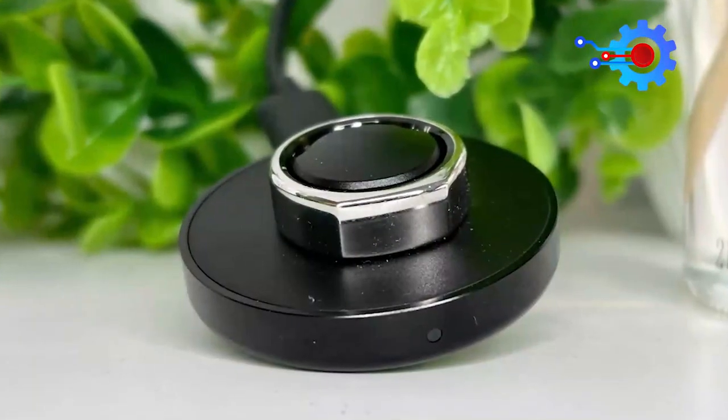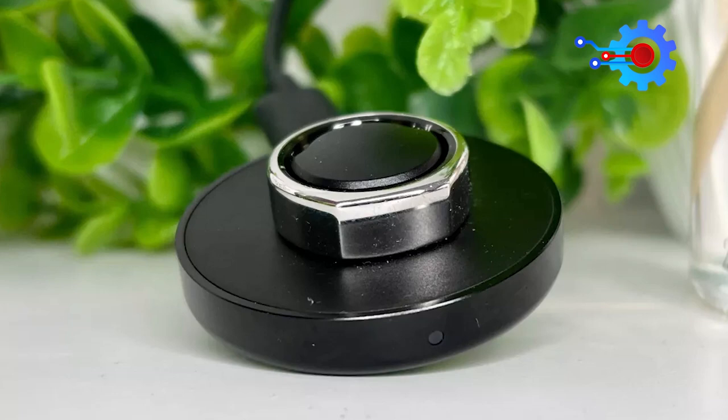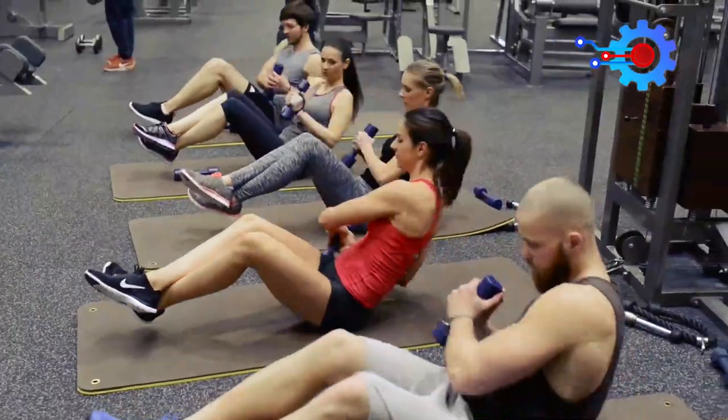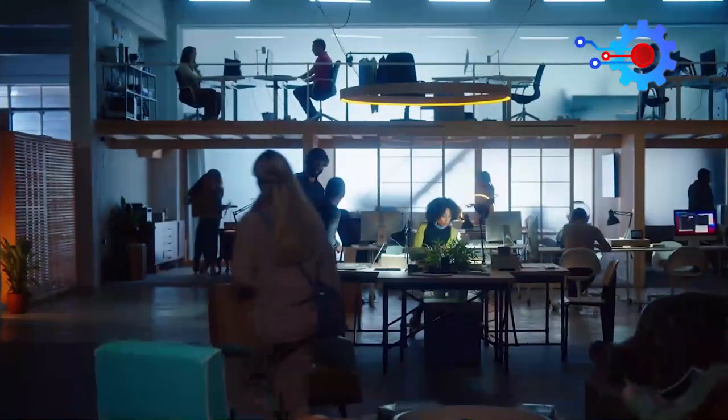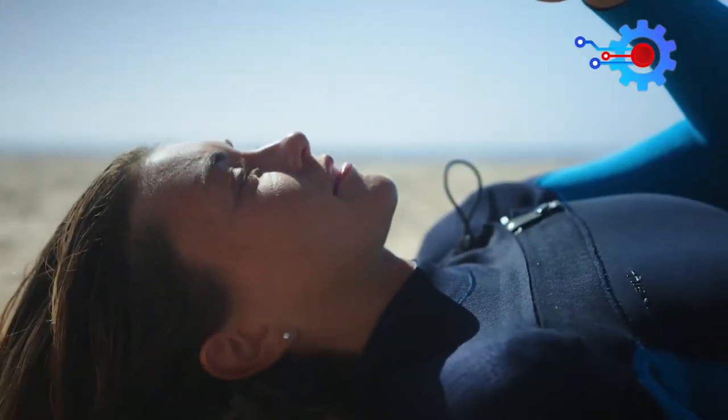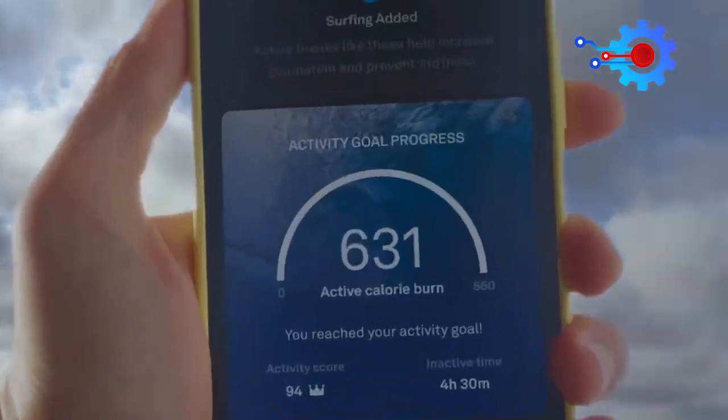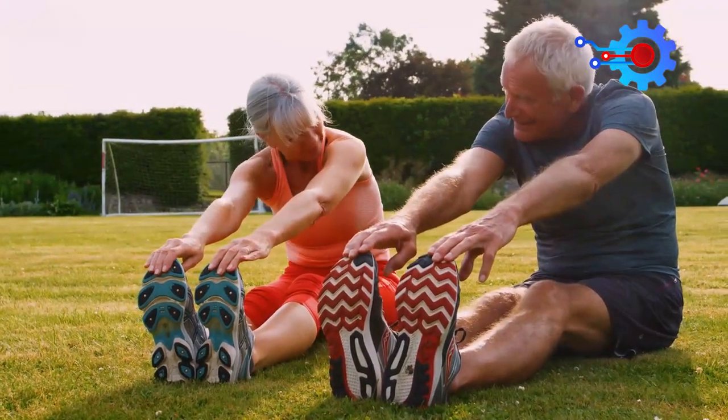The Aura Ring 3 improves over previous iterations in this regard, although it is still not an ideal fitness monitor. It syncs with an accompanying app to keep tabs on your daily activities, showing you how many steps you take, how far you go, how many calories you burn, and so on.